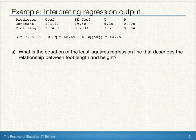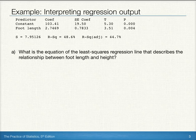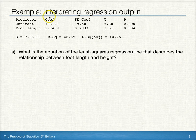First, we'll find the equation of the least squares regression line that describes the relationship between foot length and height. To do that, we'll look at the coefficient column in the output. Notice there are two numbers here.